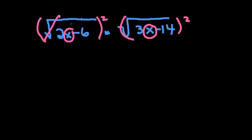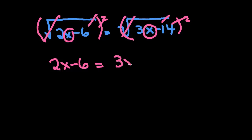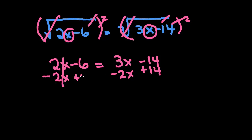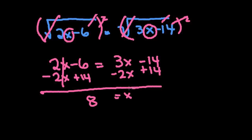So I'm going to square both sides. If I square this, the square undoes the square root, so I'm left with 2x minus 6. And it does the same thing on this side, so I'm left with 3x minus 14. This becomes a rather easy equation to solve — if I subtract 2x from both sides and add 14 to both sides, I get x equals 8, and I am done.